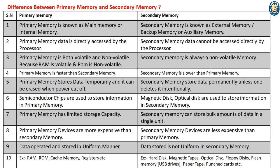6. Semiconductor chips are used to store information in primary memory. Magnetic disks and optical disks are used to store information in secondary memory.